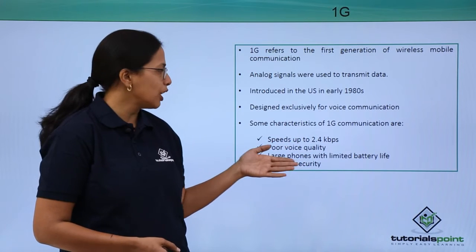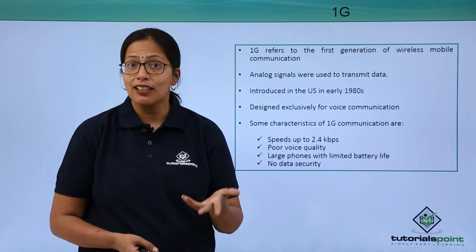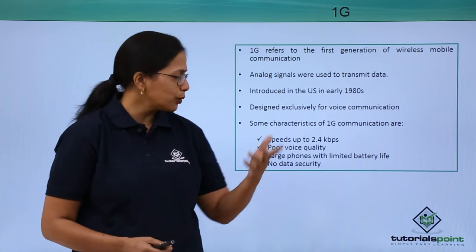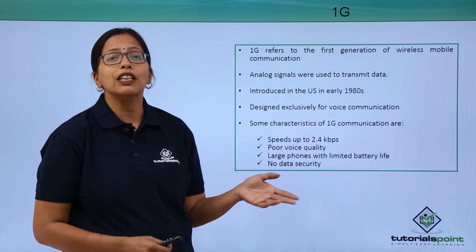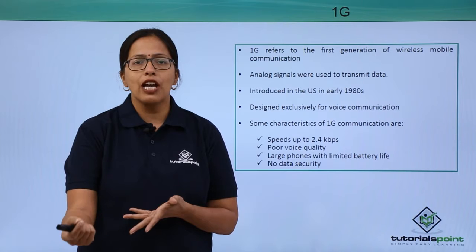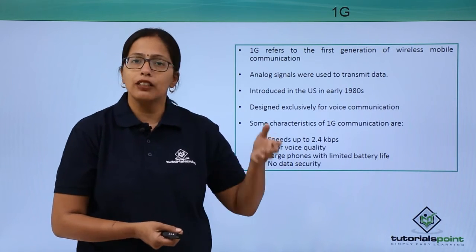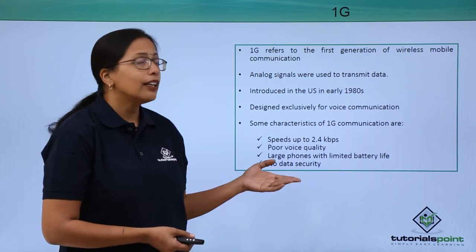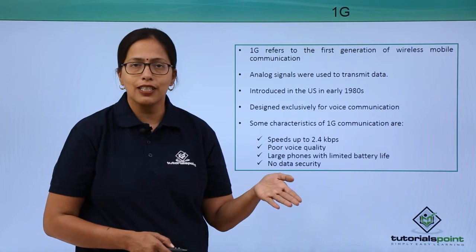Some characteristics of 1G communication: speeds were only up to 2.4 kbps. It had poor voice quality, large phones with limited battery life. Currently we use phones with battery life of 12, 18, even 48 hours, but at that point of time with first generation mobile phones, it was hardly a couple of hours. And it had no data security. But these were overcome in the next generation.